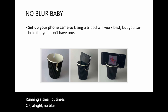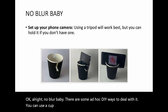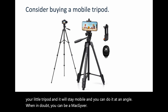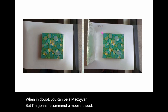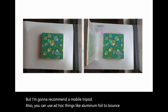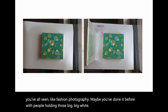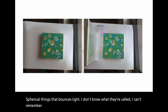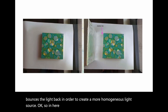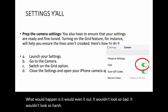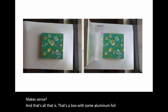There are some DIY ways to deal with blur. You can cut a cup and use it as a little tripod — it stays mobile and you can do it at an angle. When in doubt, you can MacGyver it. But I recommend a mobile tripod. You can also use aluminum foil to bounce back light — like the big spherical reflectors you've seen in fashion photography. What that does is bounce the light back to create a more homogenous light source. In a directional-light situation, having a reflector on the other side would even it out and reduce harsh shadows.